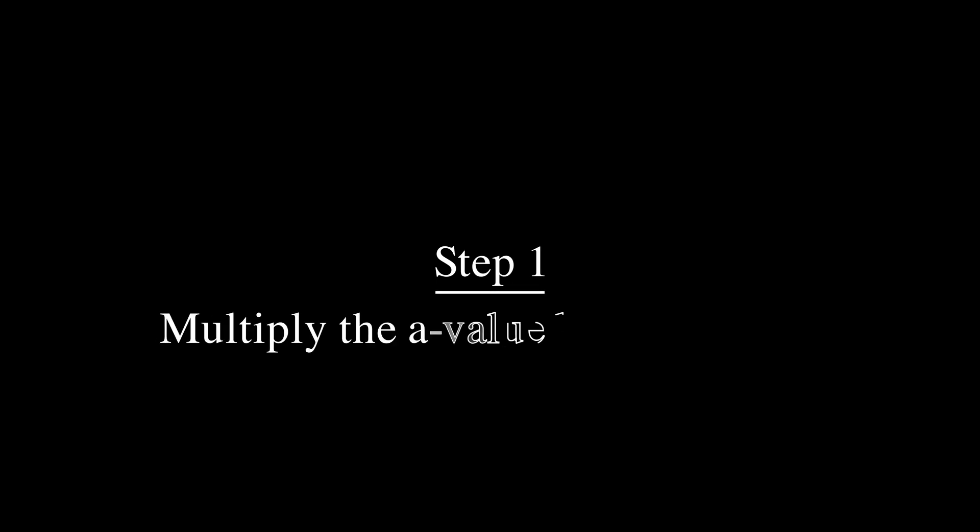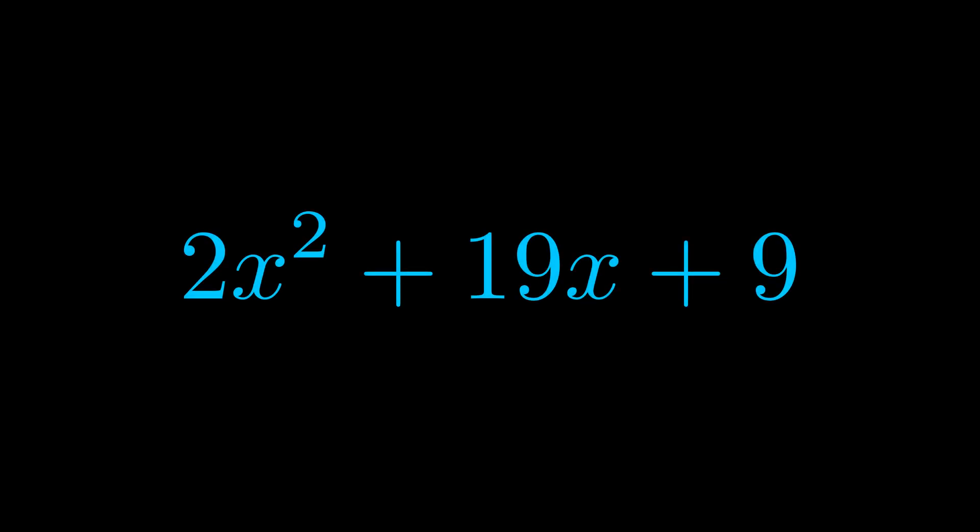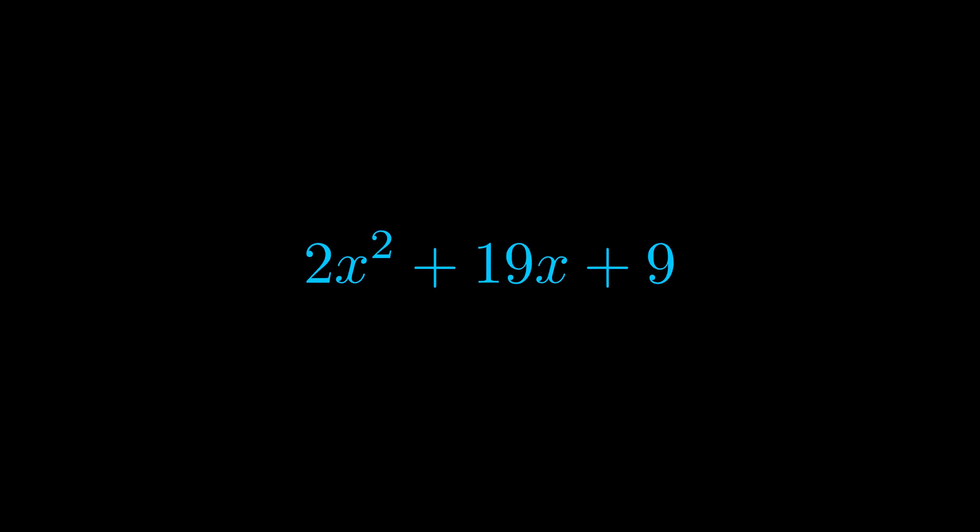Step one when factoring an equation of this form is to multiply the a value by the c value. Here we can see that our a value is the coefficient on the x squared term and our c value is the constant term.